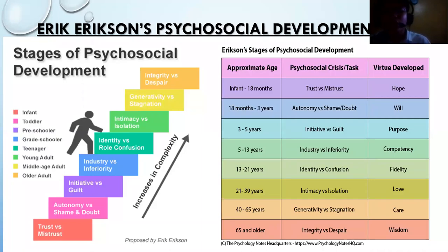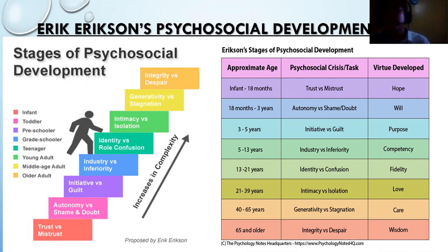In summary, the virtues developed at each stage are: hope in trust versus mistrust; will in autonomy versus shame and doubt; purpose in initiative versus guilt; competency in industry versus inferiority; fidelity in identity versus confusion; love in intimacy versus isolation; care in generativity versus stagnation; and wisdom in integrity versus despair.